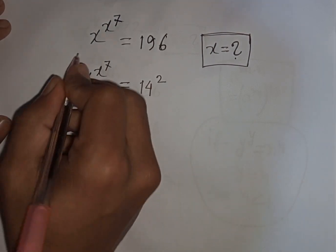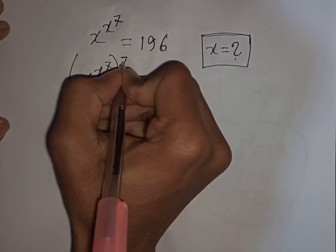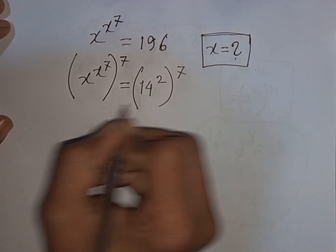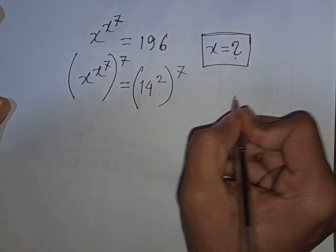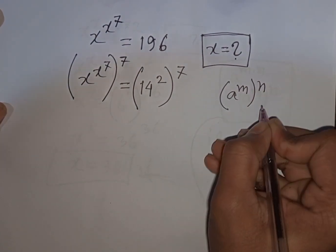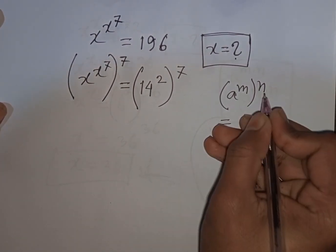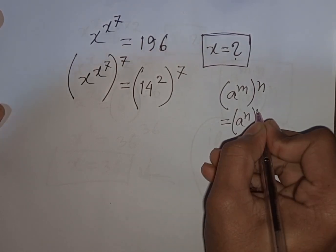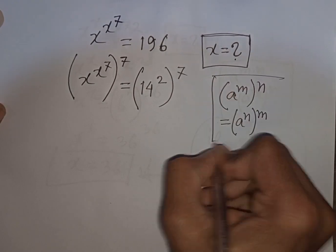Multiply by power of 7 on both sides. Now here you can apply the rule that (a^m)^n equals (a^n)^m. So according to this rule, you can write here (x^7)^(x^7).